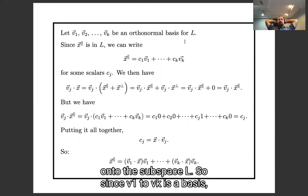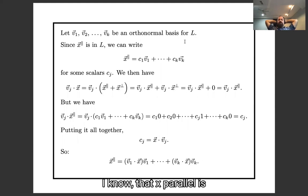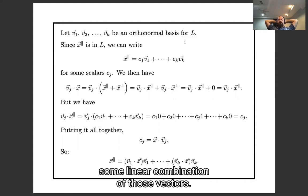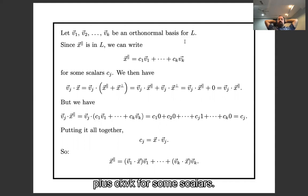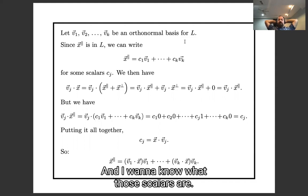So since v1 through vk is a basis, I know that x-parallel is some linear combination of those vectors. It's c1 v1, plus blah blah blah, plus ck vk, for some scalars, and I want to know what those scalars are.